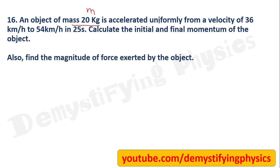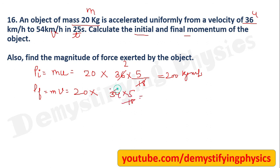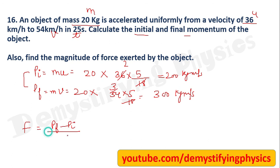An object of mass 20 kg accelerates uniformly. Convert velocities from km/h to m/s: u = 36 km/h = 10 m/s, v = 54 km/h = 15 m/s, time = 25 seconds. Initial momentum = 20 × 10 = 200 kg·m/s. Final momentum = 20 × 15 = 300 kg·m/s. Magnitude of force = (pf - pi) / t = (300 - 200) / 25 = 4 Newton.